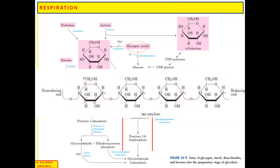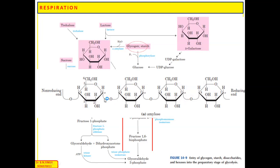Glycogen and starch consist of subunits with alpha-1,4-glycosidic bonds. The breakdown of glycogen and starch for entry into glycolysis proceeds from the non-reducing end. From this non-reducing end, one by one, the pyranose structure of glucose is broken down.